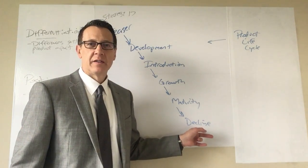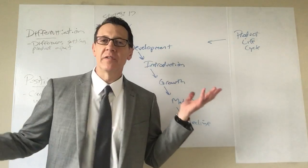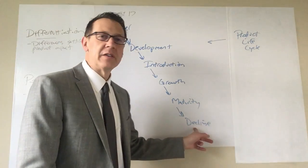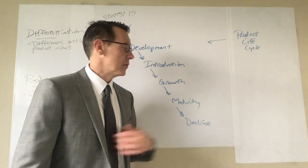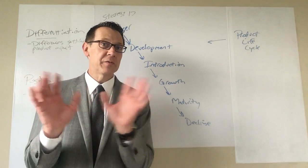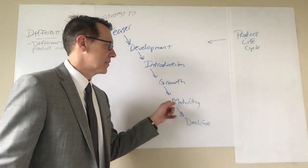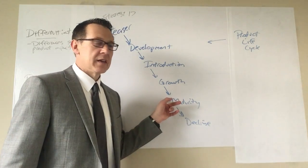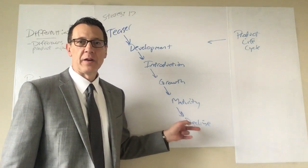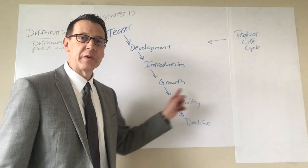If you're a Honey Nut Cheerio, you may never decline, but all your competitors did, right? So if there's room in the market for it to last forever, then you can stay in maturity forever. Somebody's probably going to have to drop out though. This is where it becomes a zero-sum game. In order for someone to win, somebody's going to have to lose, because the market is stable.